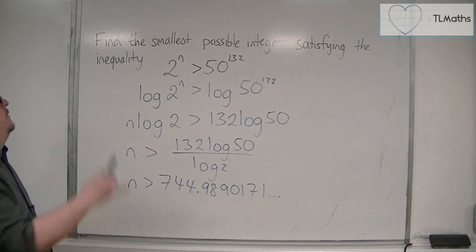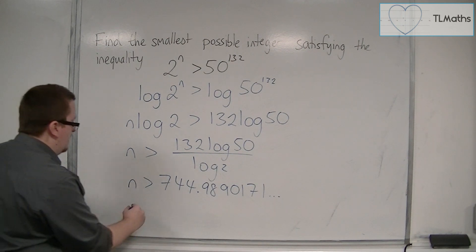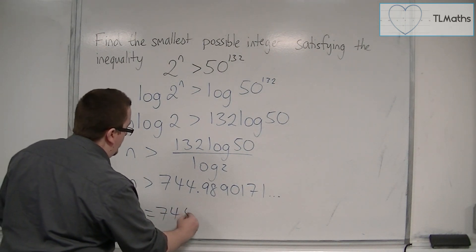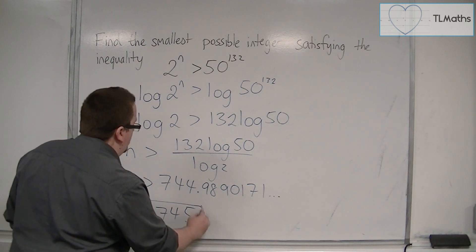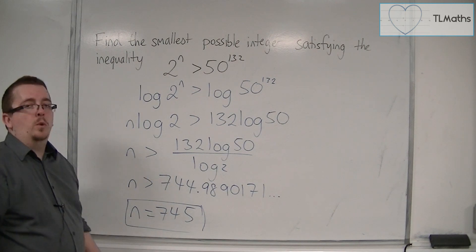The smallest possible integer that satisfies this inequality is n = 745, the next integer along from that number. And that's how we can solve this inequality.